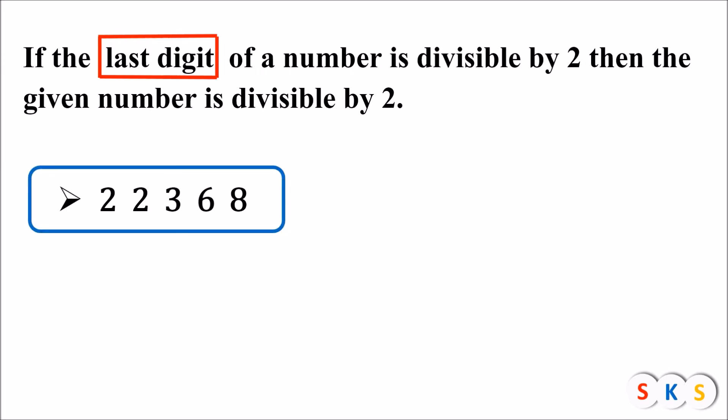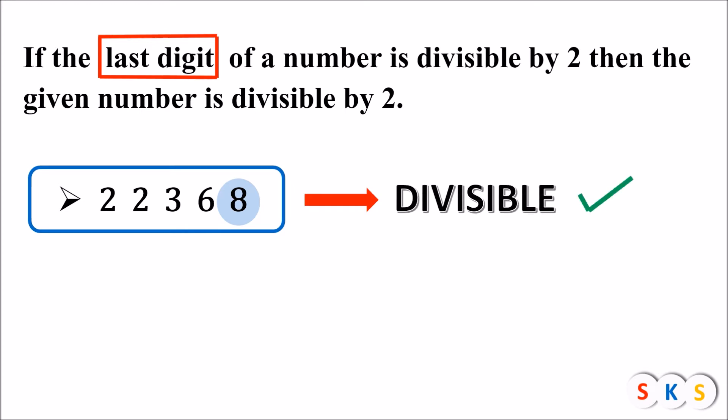Is this number divisible by 2? To know whether this number is divisible by 2 or not, we need to see the last digit of this number. Can you find the last digit of this number? It is 8. Is 8 divisible by 2? Yes, 8 is divisible by 2 — 4 times 2 is 8. So, if the last digit of a number is divisible by 2, then the number is divisible by 2. Hence, the given number is divisible by 2.